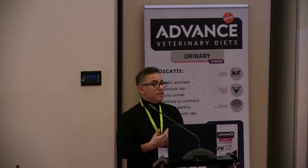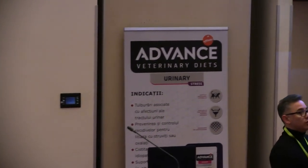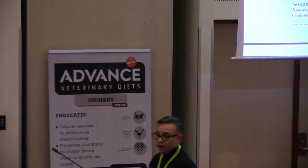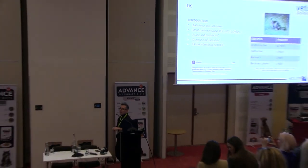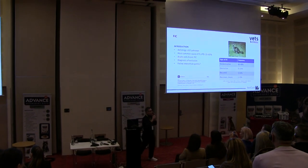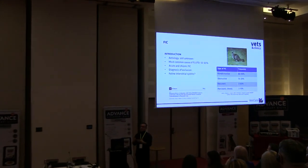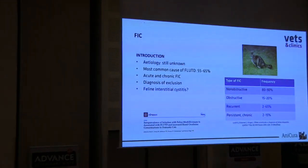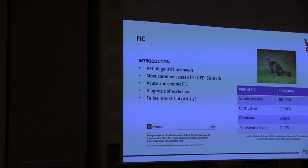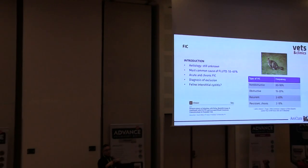The diagnosis is always by exclusion. In the past, this disease was called feline interstitial cystitis. Why this name? Because this disease is very similar to the interstitial cystitis of women. But when another study compared the histopathology between what happened in women and what happened in cats, it was totally different, and for that reason this name is actually not a good option.